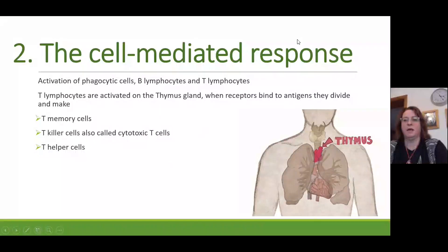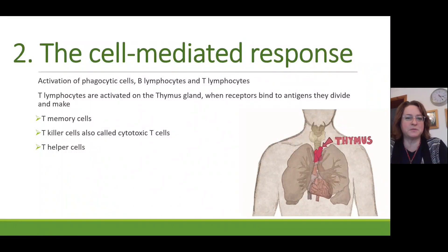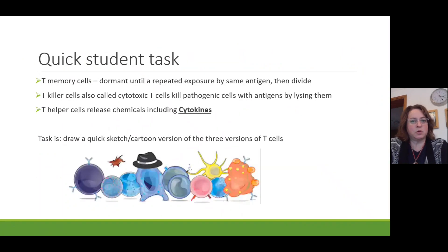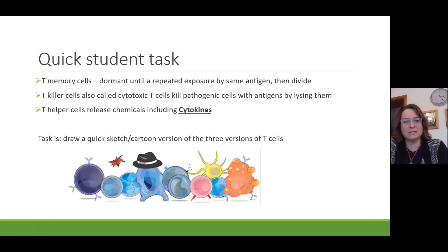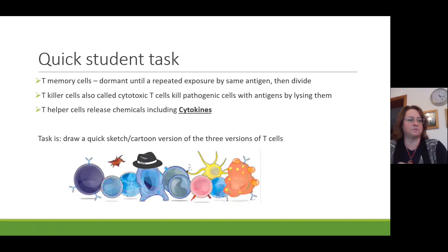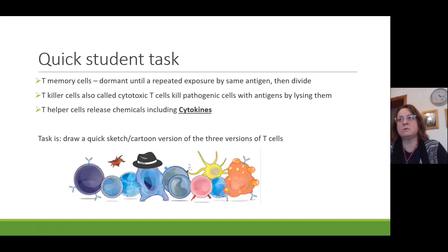Going back to the T-cells and the cell-mediated response, as per the end of the last video. The idea is that you could put the whole thing into cartoon versions. There is a flowchart in the textbook that you should be looking at, which explains how we get from the bone marrow cells to the various different cell types, and then the communication chemicals being produced. The immune system in total has something like 20-ish different cells and another 15 or 20 communication chemicals, not only histamines.